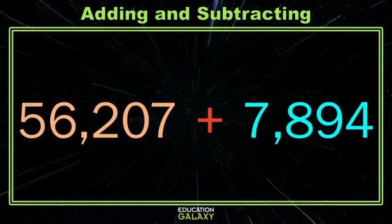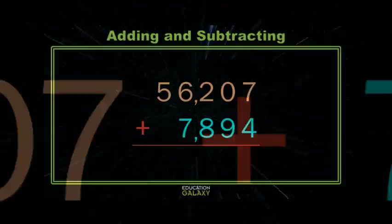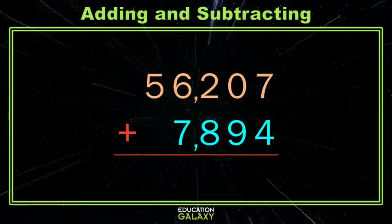When we add multi-digit whole numbers, what do we want to do first? We want to line them up by place value. Then, starting in the ones place, we shall add.